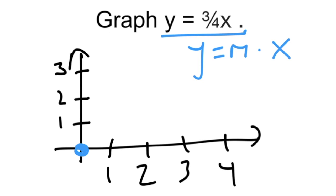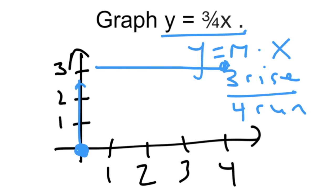Now, from that point, we can use the slope. The slope is a rise of 3 and a run of 4. So we want to, starting at our point, rise up 3 and then run 4. And that is going to be where the new point is. So we can draw our line. So now you know how to graph a proportional relationship without using a table.